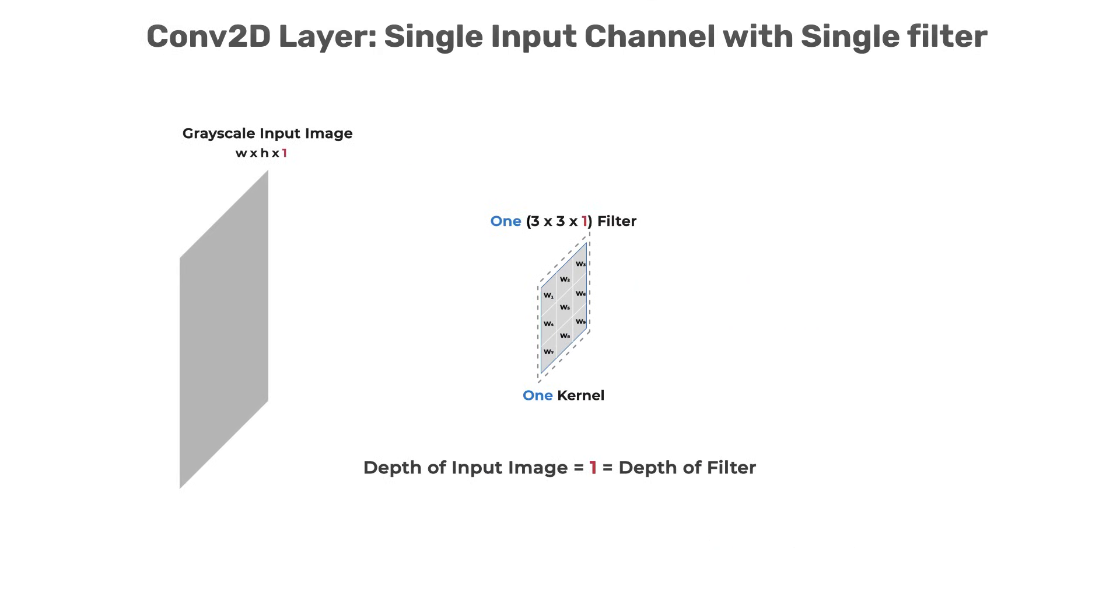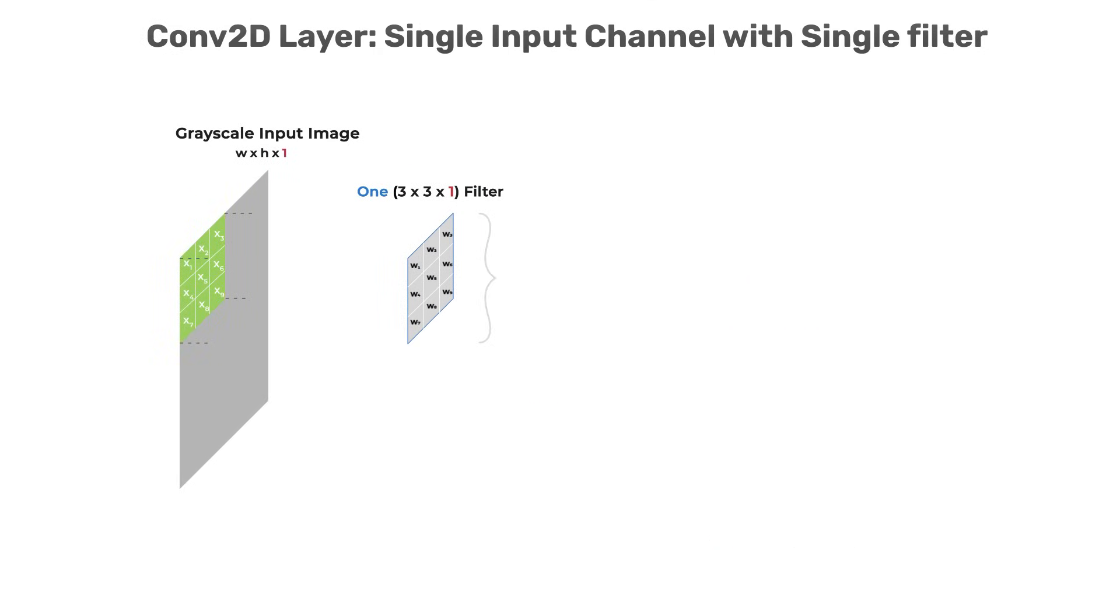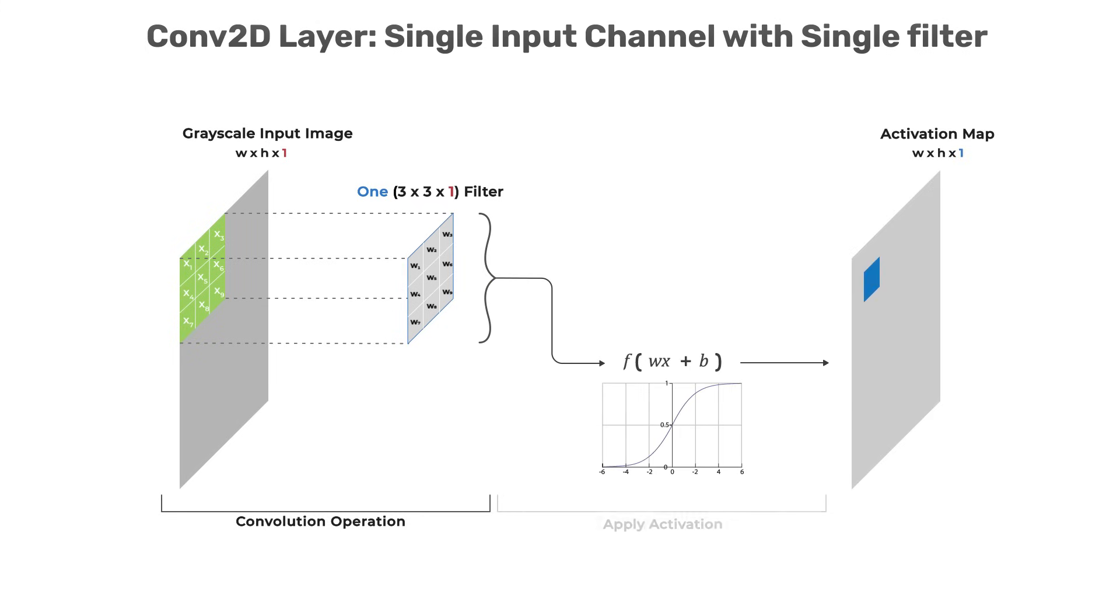In this example here, we're showing how a single filter is used to process a grayscale image as the input to a convolutional neural network. And notice that the weights in the filter, which are the elements of the kernel, are not fixed but are shown as variable, meaning that those values are learned during the training process.